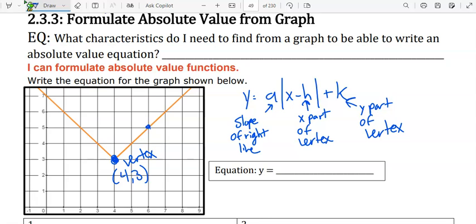And then let's find the slope of the right line. Slope of the right line. Just 1 over 1, that's 1.